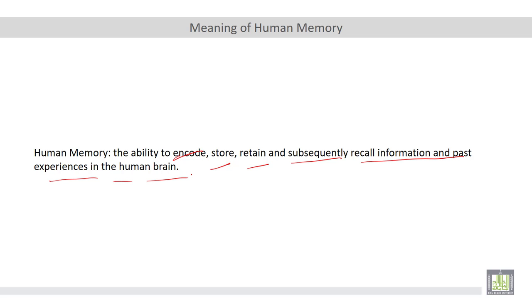We as humans differ in the ability of encoding, storing, and retaining. Some of us have very strong memories, while others have very poor or very weak memories.